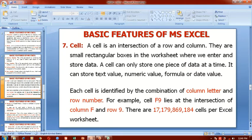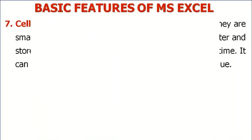The next feature is cell. A cell is an intersection of a row and column. Cells are small rectangular boxes in the worksheet where we enter and store data. A cell can only store one piece of data at a time. It can store text value, numeric value, formula, or date value.